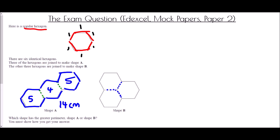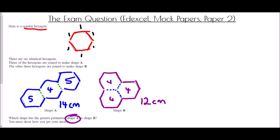In Shape B there are three dashed lines in the middle, so walking around the outside: four sides around that shape, four around the next, and four around the last. The perimeter of Shape B is twelve centimeters. So the shape with the greater perimeter is Shape A.